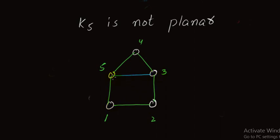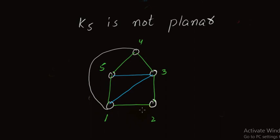I join 1 and 3. For a complete graph we have to connect each vertex to all other vertices. Vertex 1 is connected to 2, to 3, and to 5. We need to connect vertex 1 and vertex 4, so I connect them. Remember we have to avoid edge crossing. Now vertex 1 is connected to the rest of the vertices.